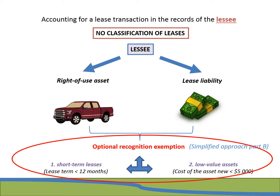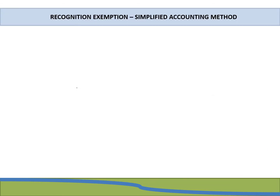In this presentation, we will focus on the recognition exemption and explain how it works, including the disclosure related to leases where the recognition exemption is applied. Some refer to this exemption as a simplified accounting method, as there is limited disclosure that relates to it, and the calculation is quite straightforward when compared to a standard lessee lease.